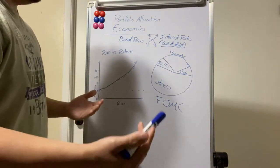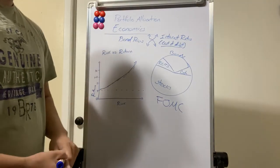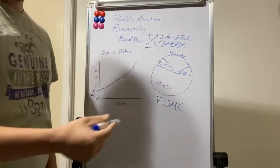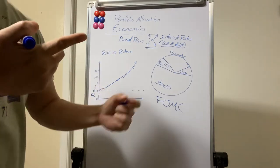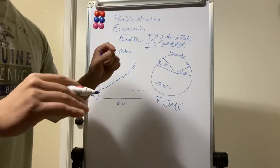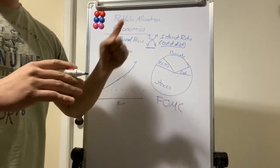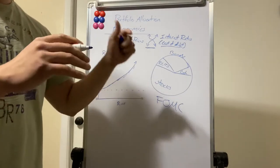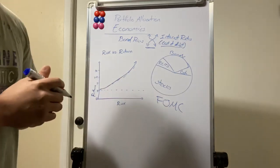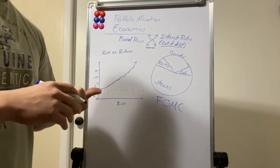Bonds are also affected when interest rates change. Bonds have an inverse relationship with interest rates: when interest rates go up, bond prices go down. Bonds have two ways of making money — the coupon (interest you receive) and price appreciation — but they're inversely related. If the interest rate goes up, bonds currently on the market will go down in price. For example, if you had a bond from five years ago yielding one percent and the economy improved.